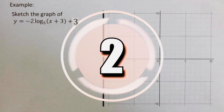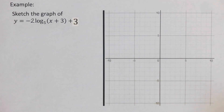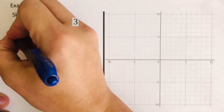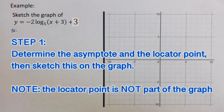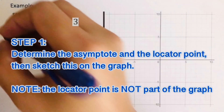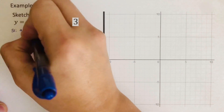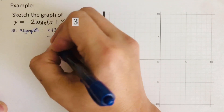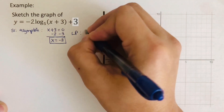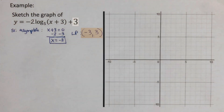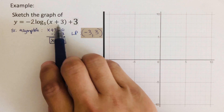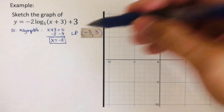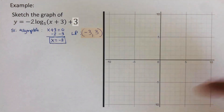Let's go over the next problem. Step one: determine the asymptote and the locator point, and sketch these on the graph. Remember, the locator point is not part of the graph. The asymptote is x equals negative 3, and the locator point is found by switching and keeping. We draw the asymptote and plot the locator point on the graph.